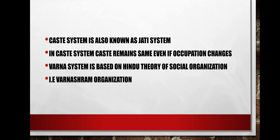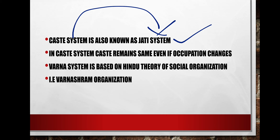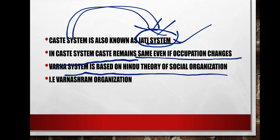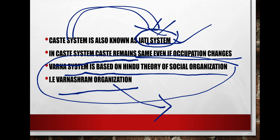The caste system is also known as the Jati system — I'll ask you to research why and comment below. In the caste system, caste remains the same even if occupation changes. The varna system is based on the Hindu theory of social organization called Varnashram organization, which sets rules and regulations to be followed by people in society.